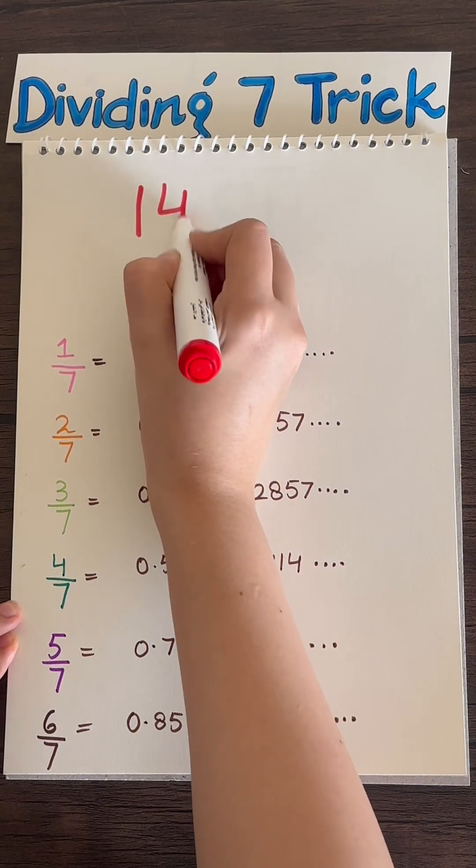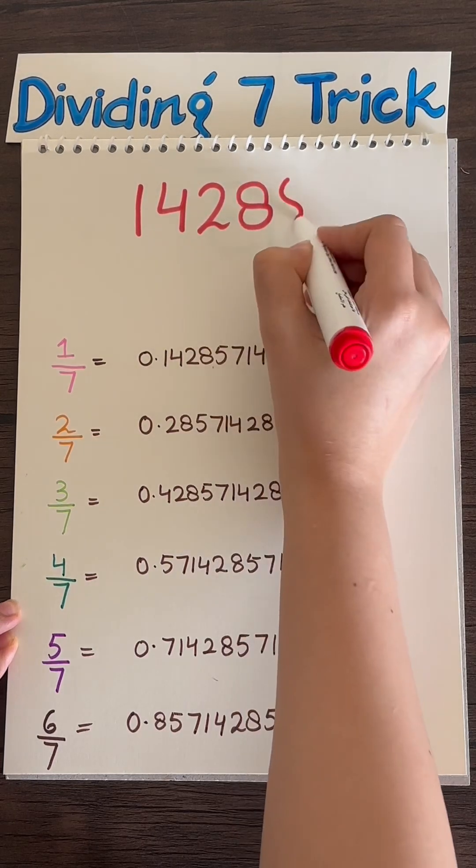Dividing by 7 addition, all you need to know is 1, 4, 2, 8, 5, and 7.